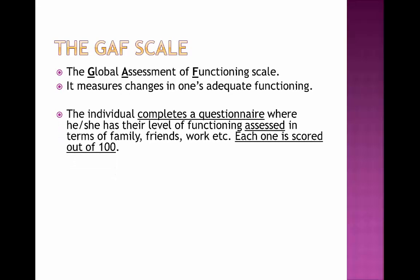The individual who wants to complete the GAF scale has to do a questionnaire where their level of functioning is assessed in terms of family, friends, work, etc. They answer some questions and are then scored out of 100 on how maladaptive their behaviours are — 100 being not maladaptive at all and 0 being absolutely maladaptive.